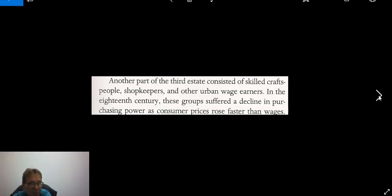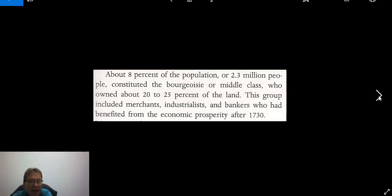Another part of the Third Estate were skilled craftsmen, shopkeepers, and urban wage earners. In the 18th century these groups suffered a decline in purchasing power as prices rose faster than wages — about eight percent was the bourgeoisie or middle class. They owned about a quarter of the land, and this group included all the new occupations that had been developing because of the industrial age. They had benefited from economic prosperity after 1730.